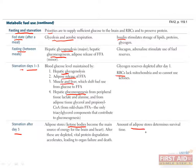Since these ketone bodies are made from fatty acids, the amount of stored adipose tissue determines survival time, assuming you have access to water and other important vitamins and minerals. Once adipose stores are depleted, vital proteins are degraded to make energy, which doesn't take long to result in organ failure and death.